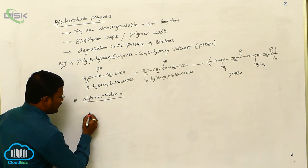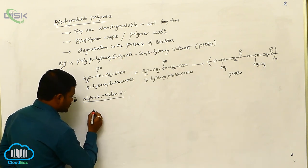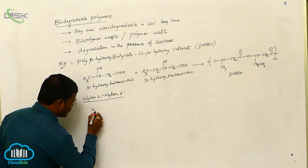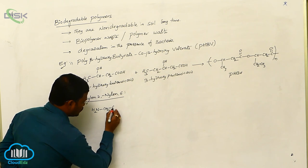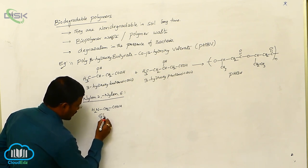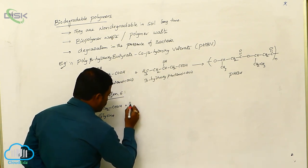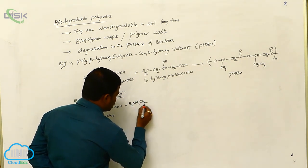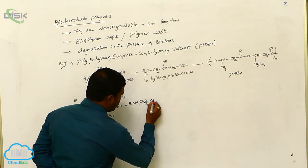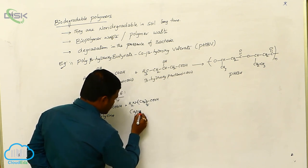For the preparation of biodegradable polymer Nylon 2, Nylon 6, the starting materials required are NH2, CH2, COOH. It is a natural amino acid named glycine. It is going to react with caproic acid: NH2, CH2, then five more CH2 groups, COOH.